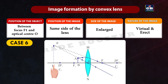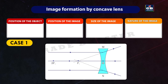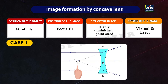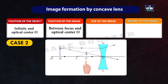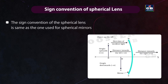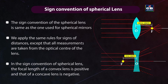Image formation by a concave lens: Case 1 — object at infinity: image at focus F1, highly diminished and point-sized, virtual and erect. Case 2 — object between infinity and optical center O: image between focus and optical center, diminished, virtual and erect. Sign convention for spherical lenses: same rules as spherical mirrors, but all measurements are taken from the optical center. The focal length of a convex lens is positive and that of a concave lens is negative.